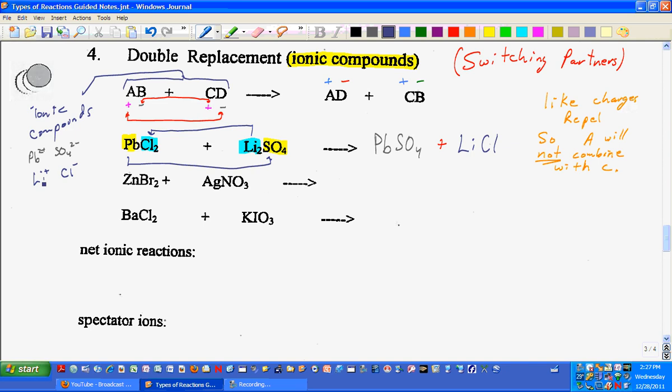It should still balance this. I had two lithiums on this side, so I'm going to have two lithiums on this side. So I put two out in front of that. I had two chlorines. That two also takes care of that. One lead, one lead, one sulfur, one sulfur, four oxygens, four oxygens, and I'm done.